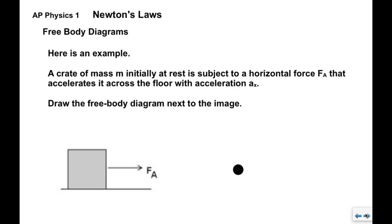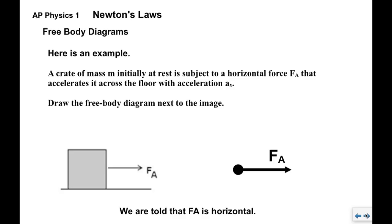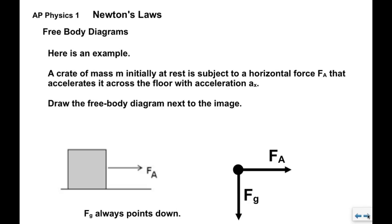Now, we'll look at an example of creating a free body diagram. We have a crate here that's initially at rest and we're going to apply a force to the right. It's horizontal. And we're told that the box is going to accelerate across the floor with some acceleration A sub X. We're going to draw the free body diagram here. So, again, we have some things that are automatic. We're told F sub A is horizontal. So, we apply that to the object here. The little ball was the object.